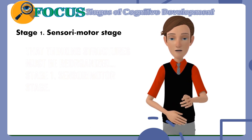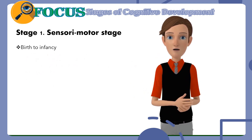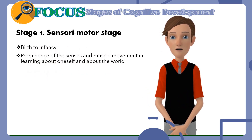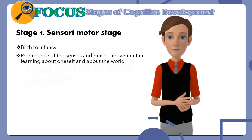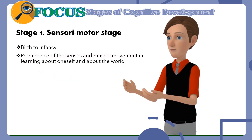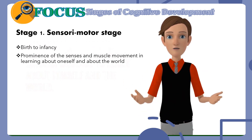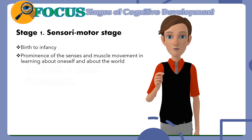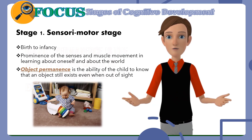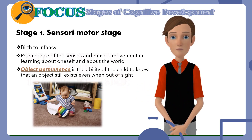Stage 1: Sensorimotor Stage. The first stage corresponds from birth to infancy. This is the stage when a child who is initially reflexive in grasping, sucking, and reaching becomes more organized in his movement and activity. The term sensorimotor focuses on the prominence of the senses and muscle movement through which the infant learns about himself and the world. The prominent feature of this stage is object permanence — the ability of the child to know that an object still exists even when out of sight.